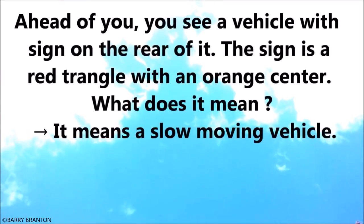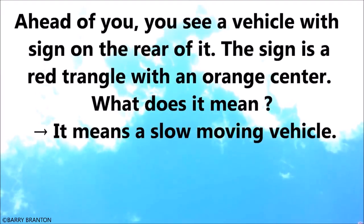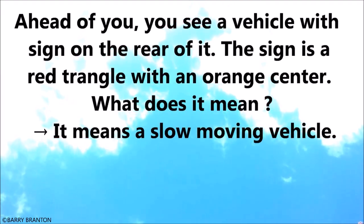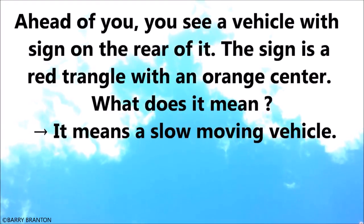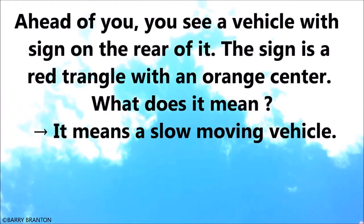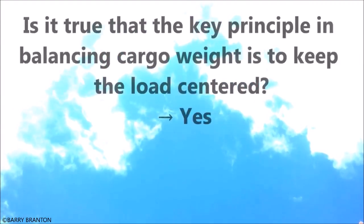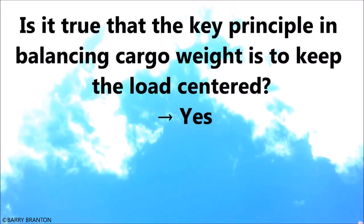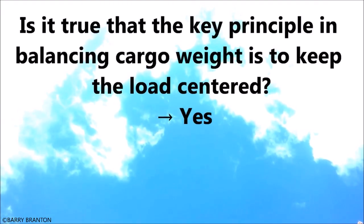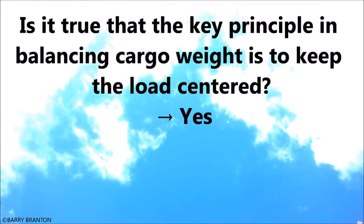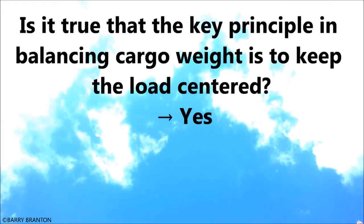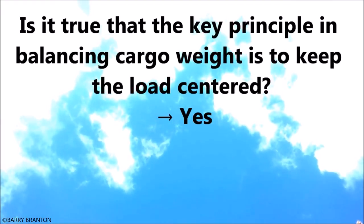Ahead of you, you see a vehicle with a sign on the rear of it. The sign is a red triangle with an orange center. What does it mean? It means a slow-moving vehicle. Is it true that the key principle in balancing cargo weight is to keep the load centered? Yes.